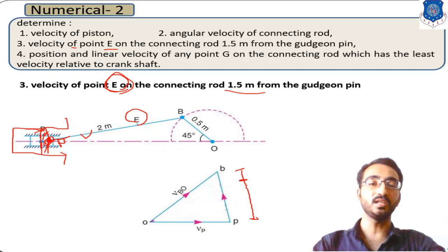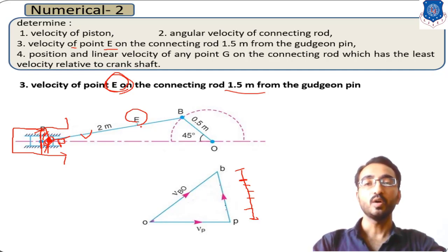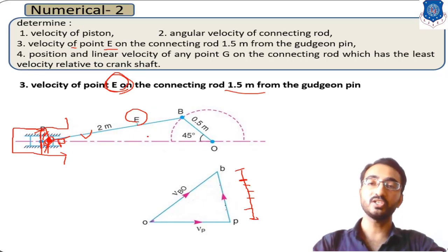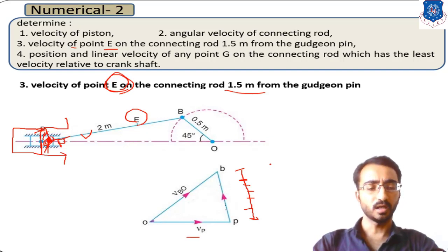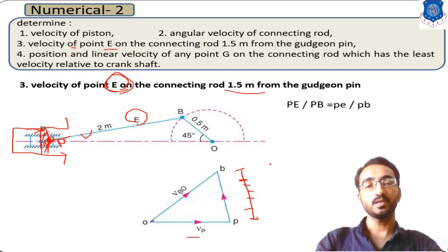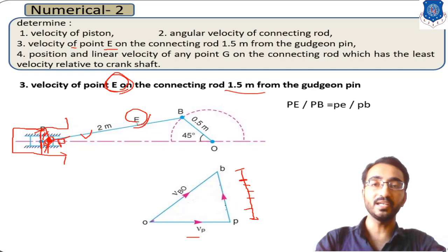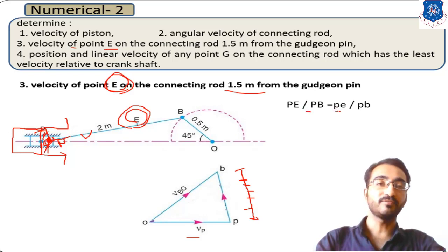Point E will appear at a certain distance along line BP in the velocity diagram. The distance is obtained using the ratio of lengths on the configuration diagram, which will be similar to the ratio of lengths on the velocity diagram. As learned previously, the ratio of the length of any rigid point from the end points is the same on both the configuration diagram and the velocity diagram.